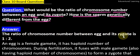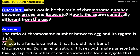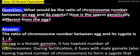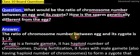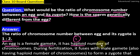The answer is: the ratio of chromosome number between an egg and its zygote is 1 is to 2. An egg is a female gamete — of course, because it gets created in the ovum. It has haploid cells. Haploid means one number of chromosomes. Haploid is one, diploid is two — haploid number of chromosomes.